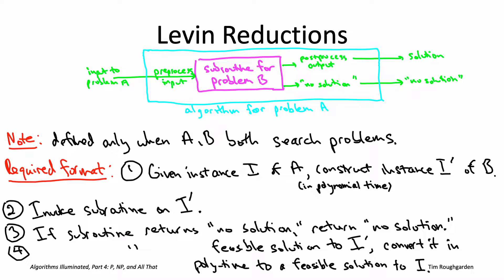You now know all about Cook reductions and the special case of Levin reductions. There's a third type of reduction you're likely to see in pretty much any book on complexity theory and also plenty of books on algorithms, which is sometimes called a Karp reduction — or you may see it called a many-to-one reduction or mapping reduction. A Karp reduction is basically just a Levin reduction except for decision problems instead of search problems.